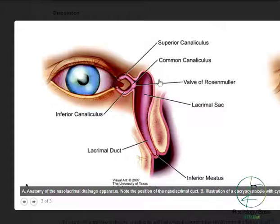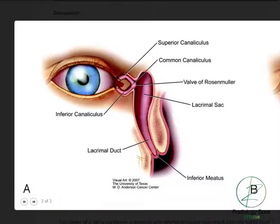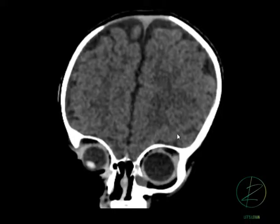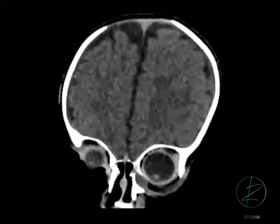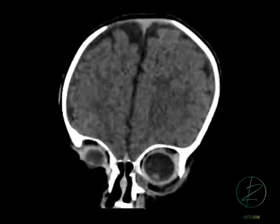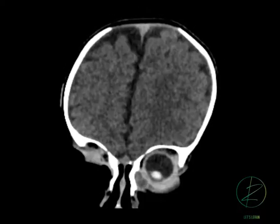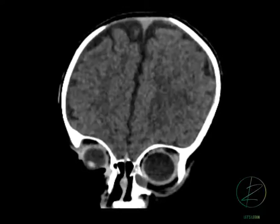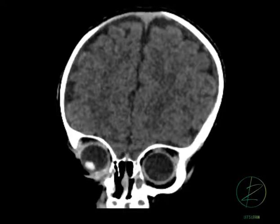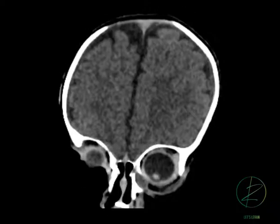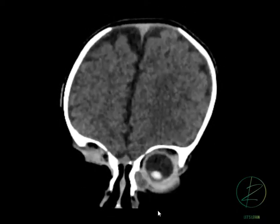The lacrimal duct goes inferiorly and opens in the inferior meatus. If this region blocks, it will cause a swelling of the lacrimal duct and form a cystic area — you can see in this picture a cystic area along the medial canthus extending into a lacrimal cyst. This is known as a dacryocystocele, and it extends from the medial canthus inferiorly up to the inferior meatus, which is the normal opening of the lacrimal duct.